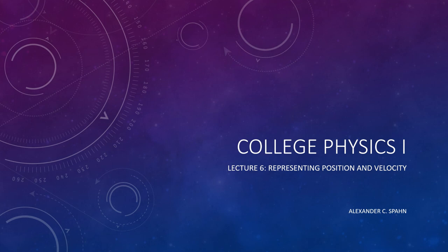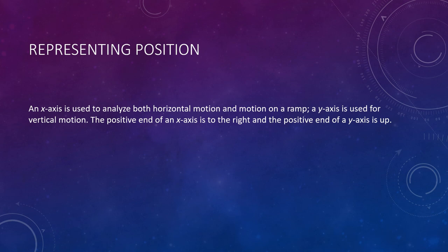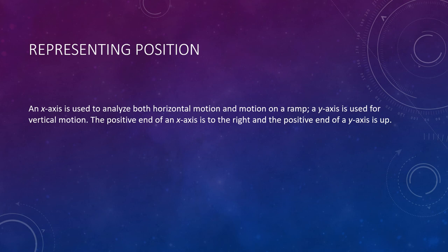With this in mind, let's start representing position. We'll begin with a basic definition of how to use coordinate axes. When we use an x-axis, it's typically used for horizontal motion, but it can also be used for motion along a ramp. A y-axis is used for vertical motion — for example, an object that jumps upward or somebody dropping an object off a building. The positive end of an x-axis is to the right, the negative end is to the left. The positive end of a y-axis is upward, and the negative end is downward.